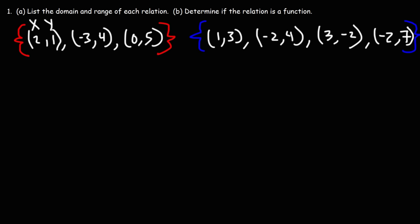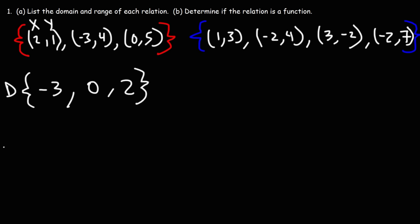Now let's focus on part a: list the domain and range of each relation. Starting with the domain, we list all of the x values in ascending order: negative 3, 0, and 2. For the range, we focus on the y values, which are already in ascending order: 1, 4, and 5.